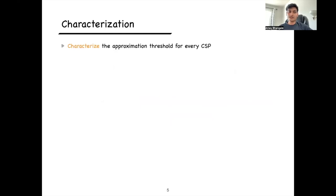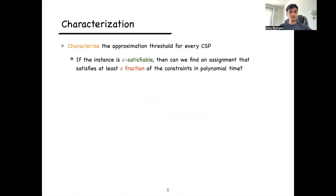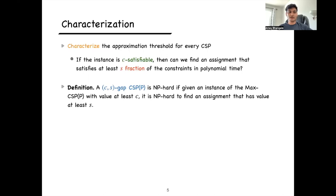The question we are interested in is characterizing the approximation threshold for every CSP. For 3SAT, you can ask whether 7/8 is the best approximation or if you can do better, and what is the best alpha for the max CSP. Formally, if the instance is C-satisfiable, can we find an assignment satisfying at least S fraction of the constraints in polynomial time? This is called the C-S gap CSP problem. We say the problem is NP-hard if, given an instance with value at least C, it is NP-hard to find an assignment with value at least S. C is called the completeness and S is called the soundness.